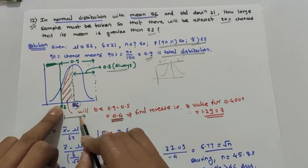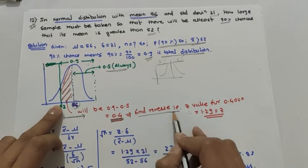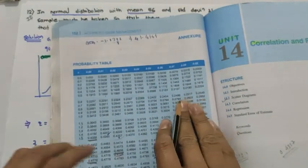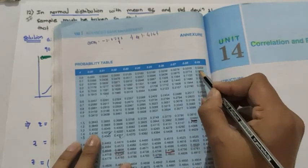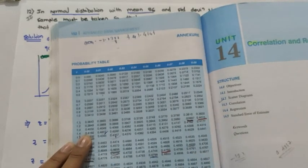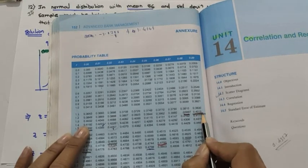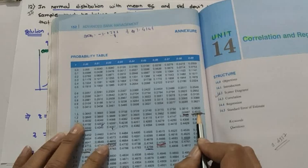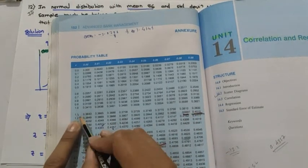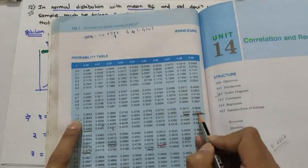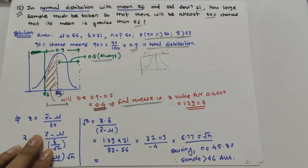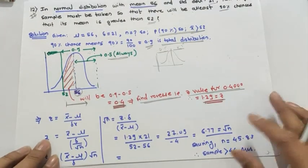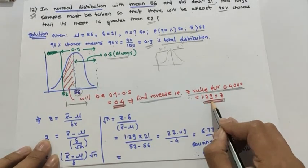We look up the z-table for 0.4000. We find the value 0.4000 in the table. The corresponding value of z is 1.29 — that is, row 1.2 and last digit 9 gives 1.29. So the value of z for 0.4 is 1.29, working in reverse order.